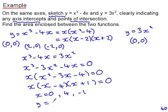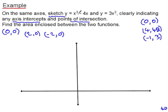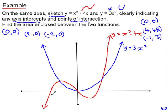The corresponding y values are: when x is 0, y is 0; when x is 4, y is 48; and when x is negative 1, y is 3. So the axis intercepts are 0, 0 and plus and minus 2, 0, and the intersections of the two functions are at 0, 0 and 4, 48 and negative 1, 3. The cubic has a positive coefficient of x cubed, and the quadratic is concave up. The enclosed area is split into two sections between these intersection points.